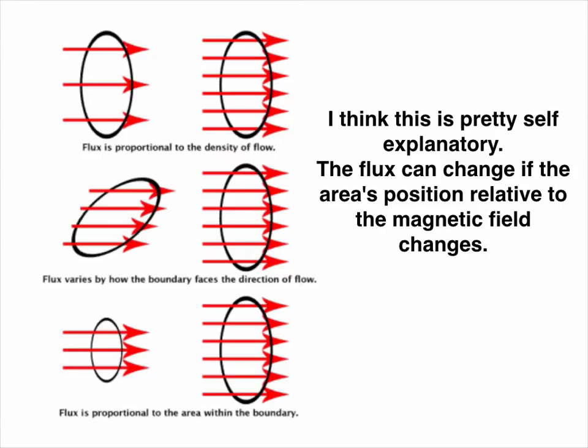I think this is pretty self-explanatory, but clearly the flux through an area can change if the area's position relative to the magnetic field changes.